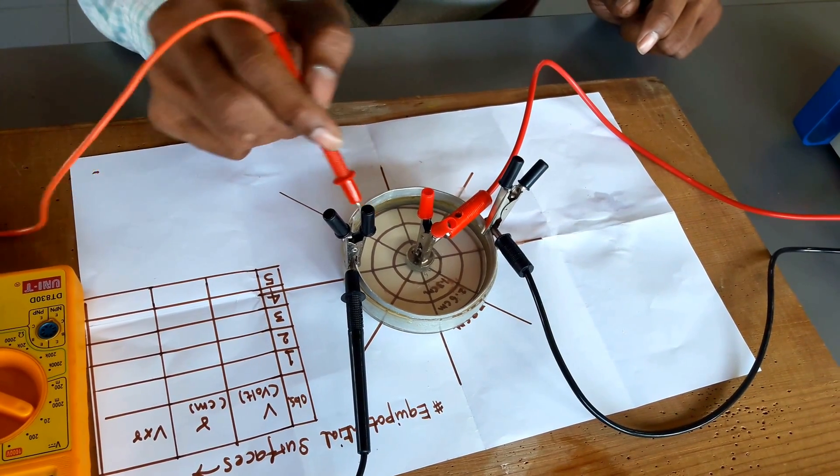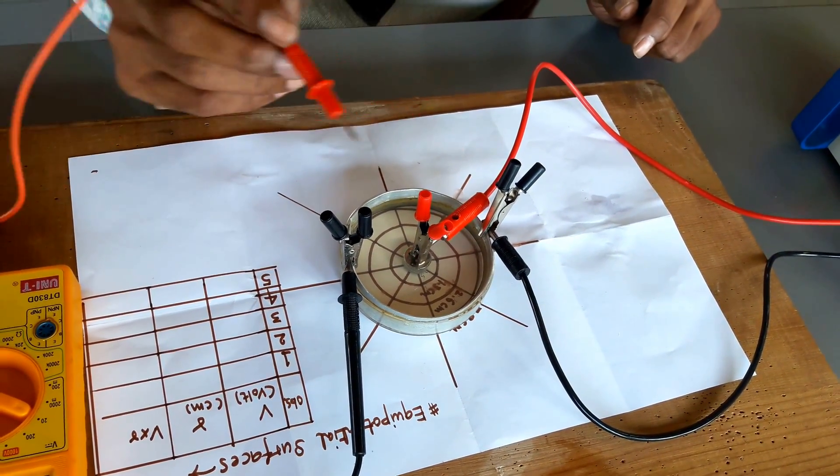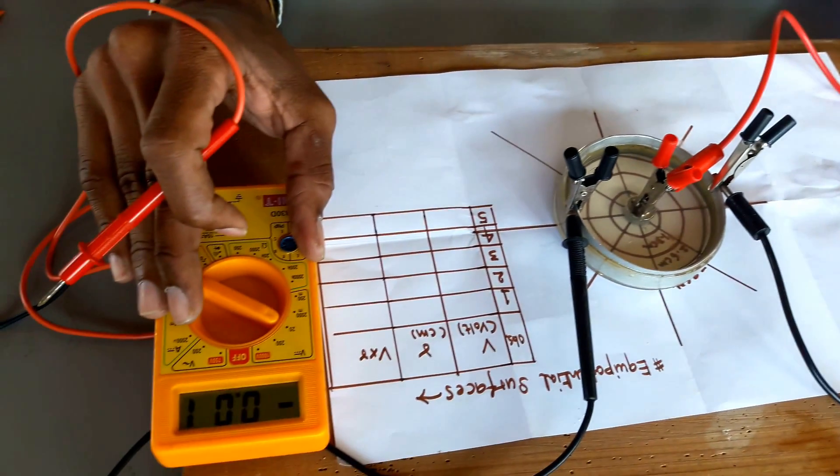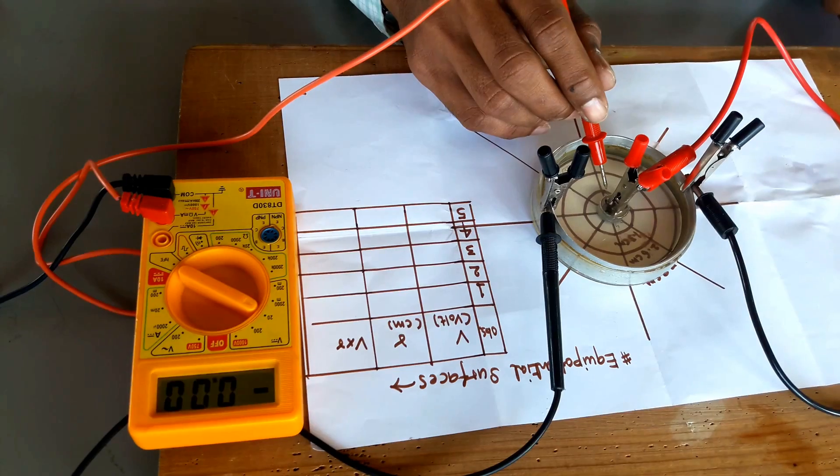We have poured some water. The ring is placed inside this glass tube. Now we have also taken a voltmeter to measure the potential difference at various places.